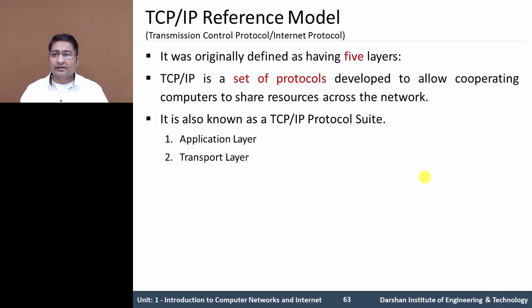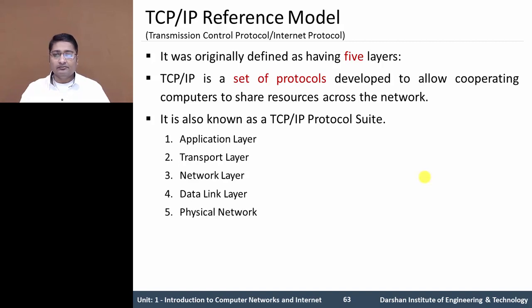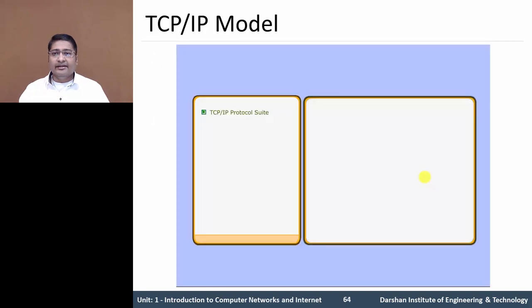The first one is Application Layer, Transport Layer, Network Layer, Data Link Layer, and last Physical Network Layer. Let's see in detail.